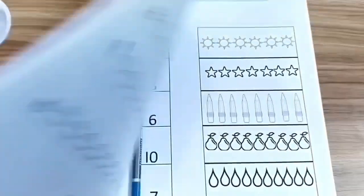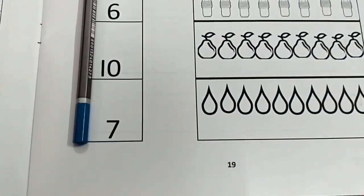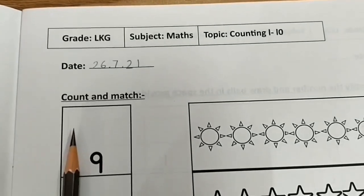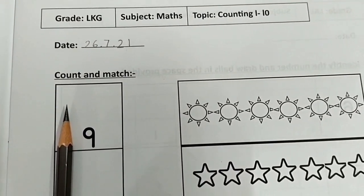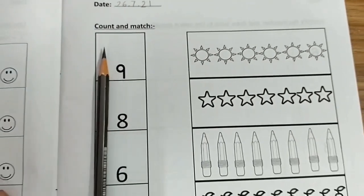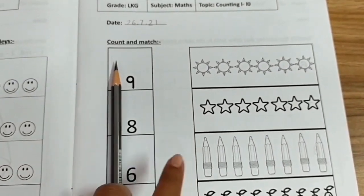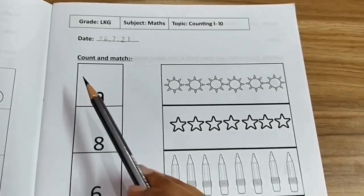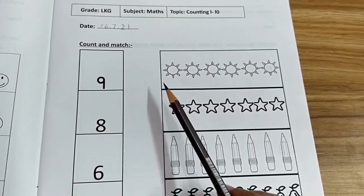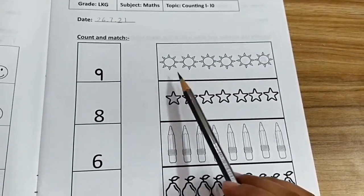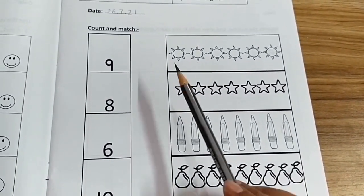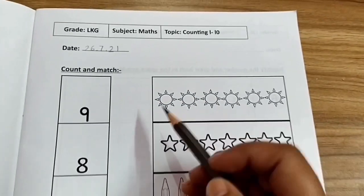Open your maths practice book to page number 19. First write the date that is 26 July 2021. Let's see what we have to do on this page. Count and match. First, we will count the objects, then find the numbers from the first column and match them. What are these? These are suns.